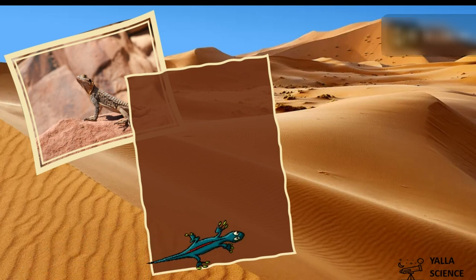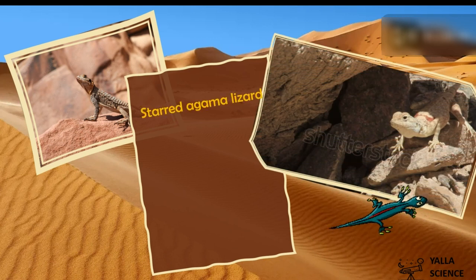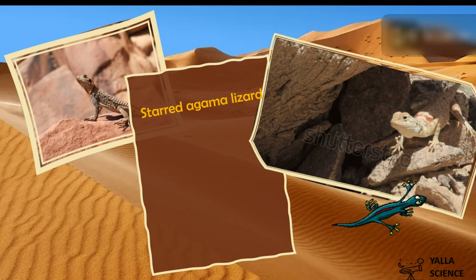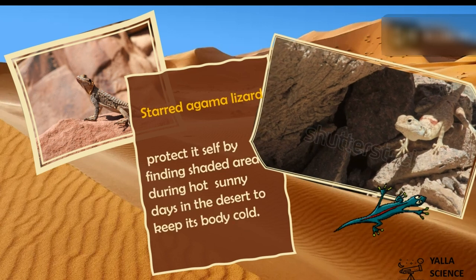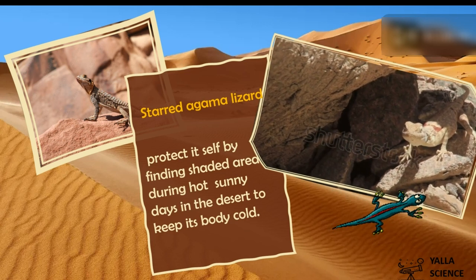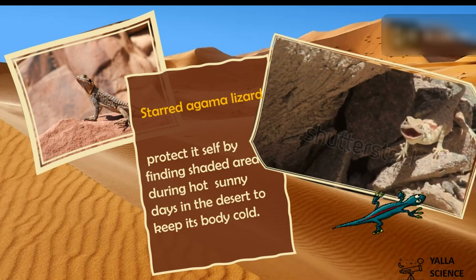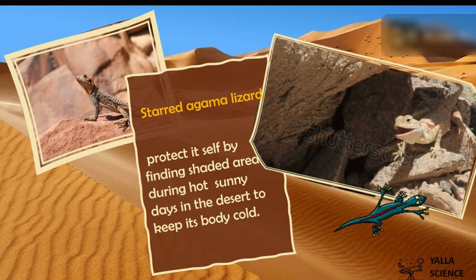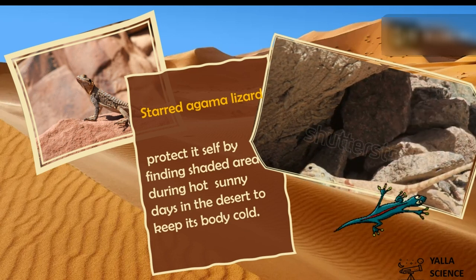Do you know this lizard? It's the spiny-tailed agama lizard. How does the spiny-tailed agama protect itself from hot temperature? You might think it can hold an umbrella — of course not! It tries to find a shaded area during hot sunny days to keep its body cool.